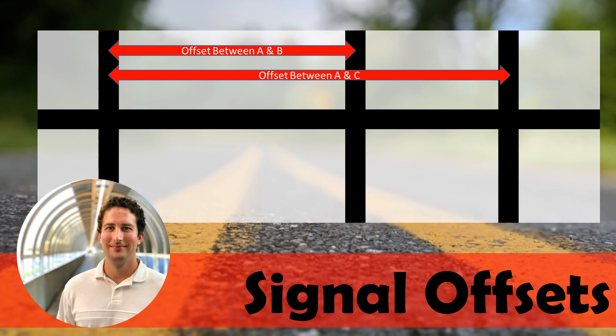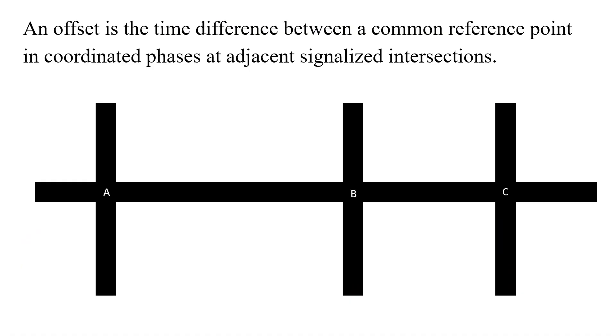Offsets are an important component of coordinated signal systems. An offset is the time difference between the common reference point in coordinated phases at adjacent signalized intersections. Essentially, in simple terms, we're looking at the time difference between two signalized intersections in a coordinated signal system.